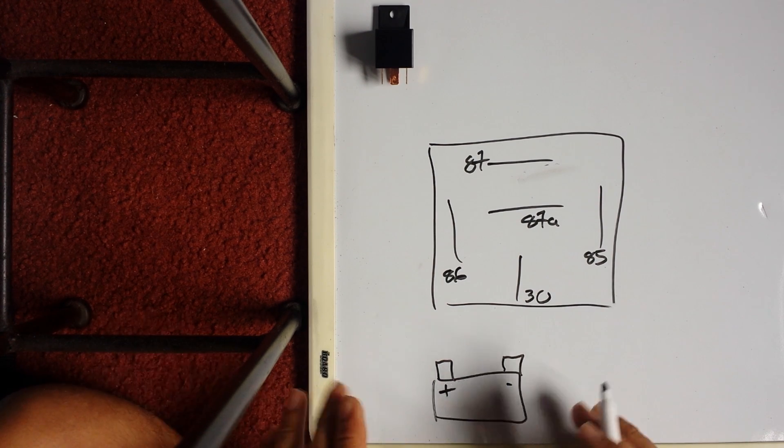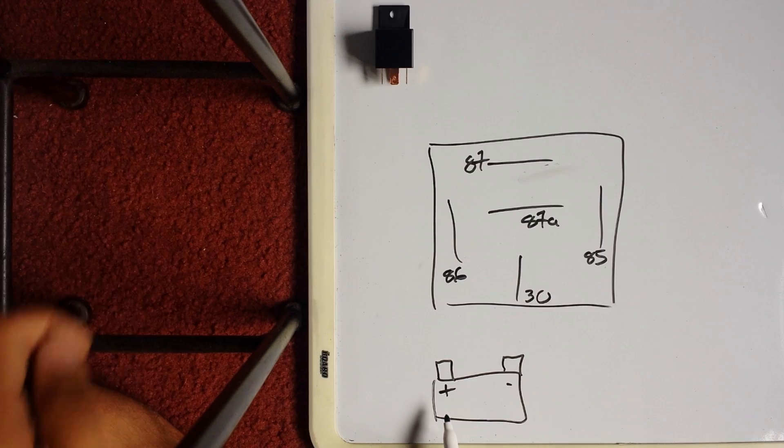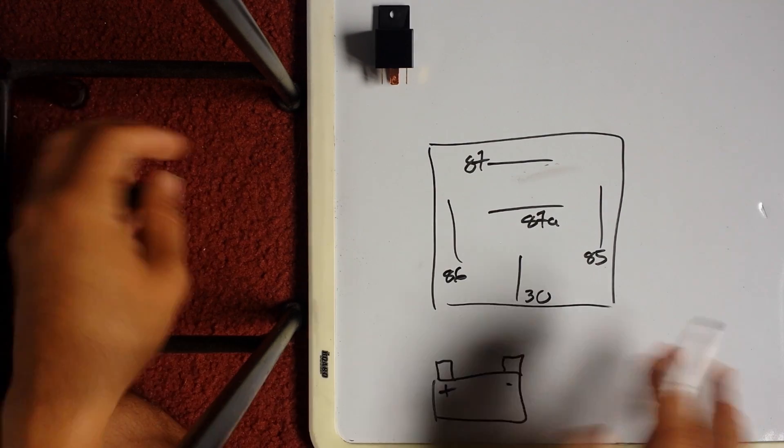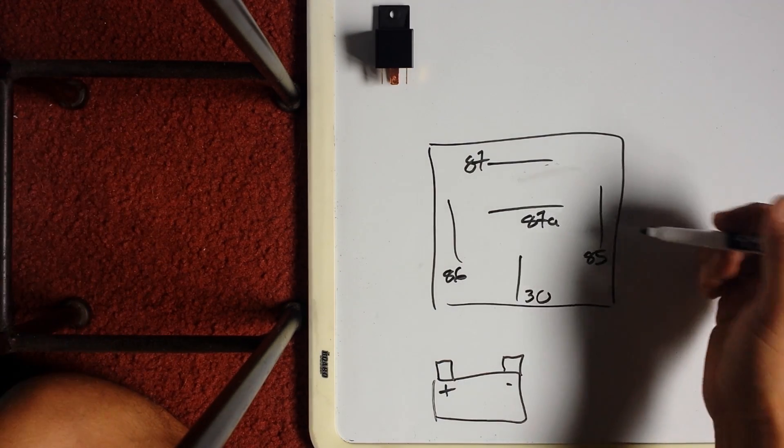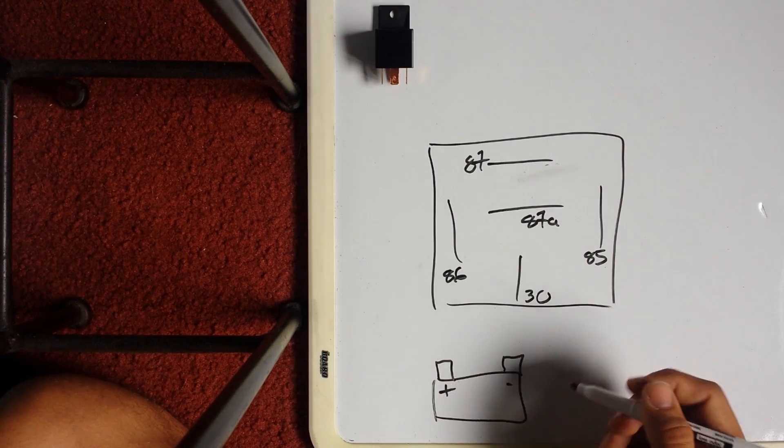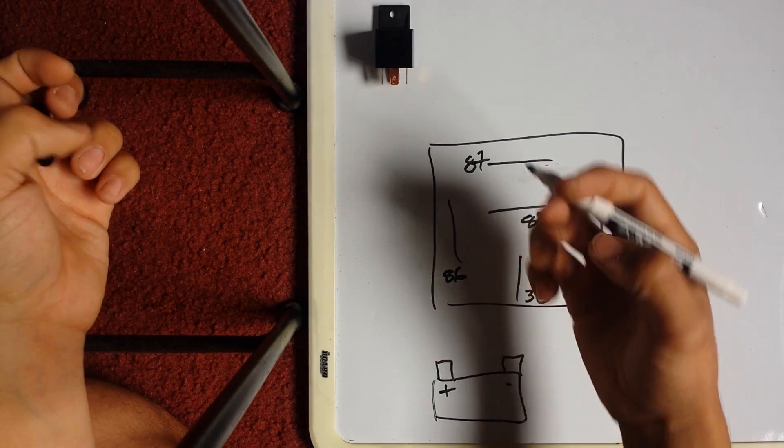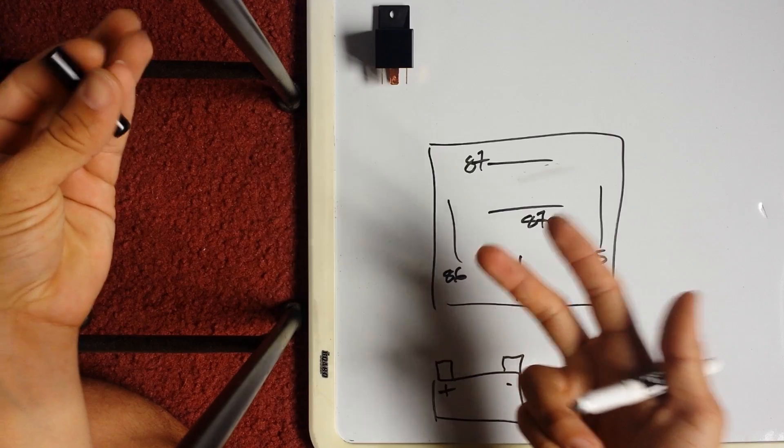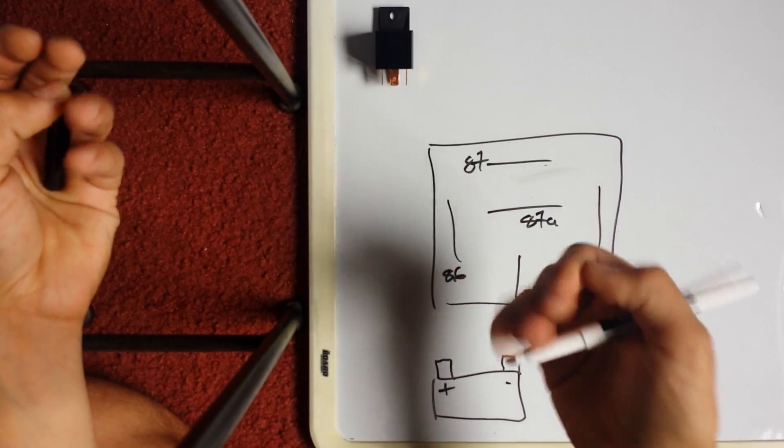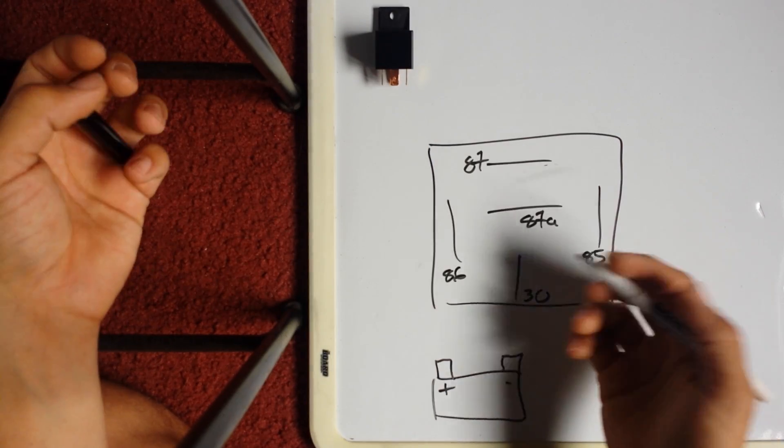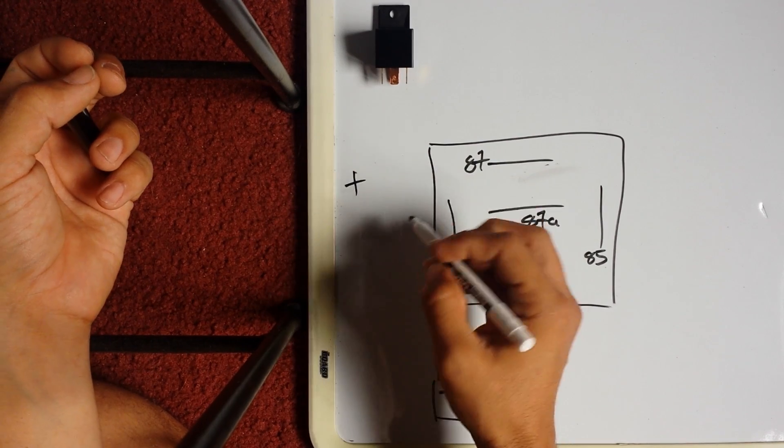Just like a car battery post, you've got positive and negative. Now on a car battery, one post is always positive, one's negative. They don't change. But we're energizing this relay from the car battery, so like anything else—flashlight, any electronic device.